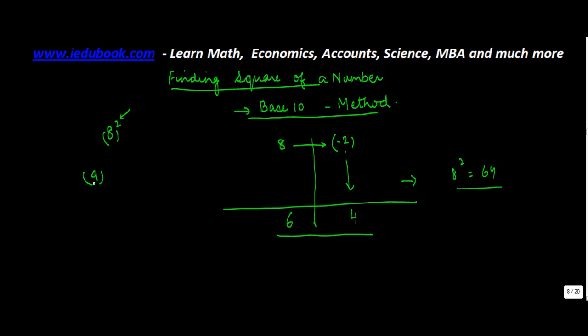Let's try to find out the square of 9, taking base as 10. Now 9 minus 10 will give you minus 1. So you do the square of minus 1. This will give you 1. Now do the sum of these two. What will you get? You will get 9 minus 1, which will give you 8. So square of 9 is equal to 81.